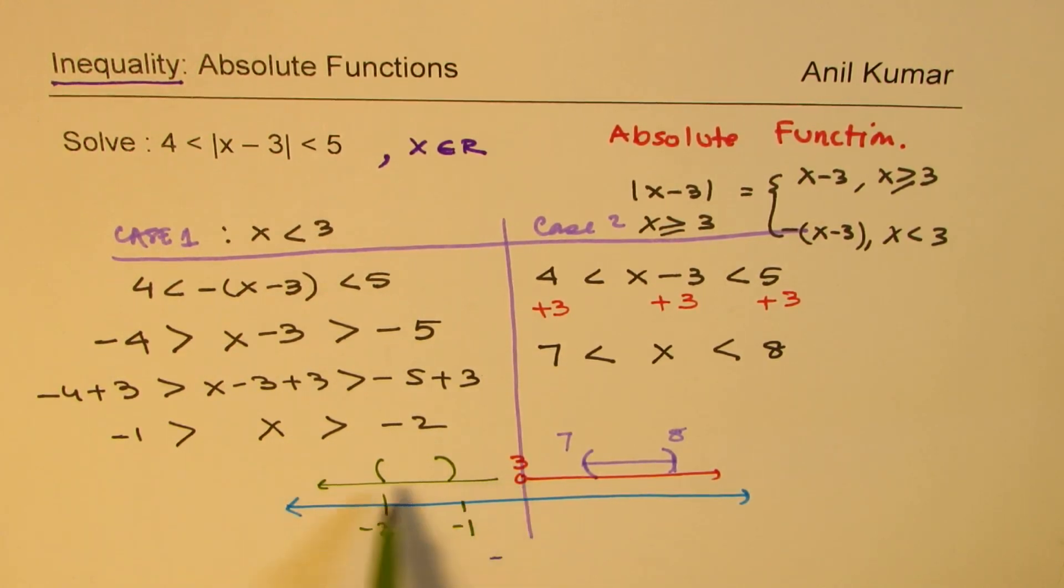Both are less than 3, so both are solutions. So therefore the solution of this particular inequality should be what?